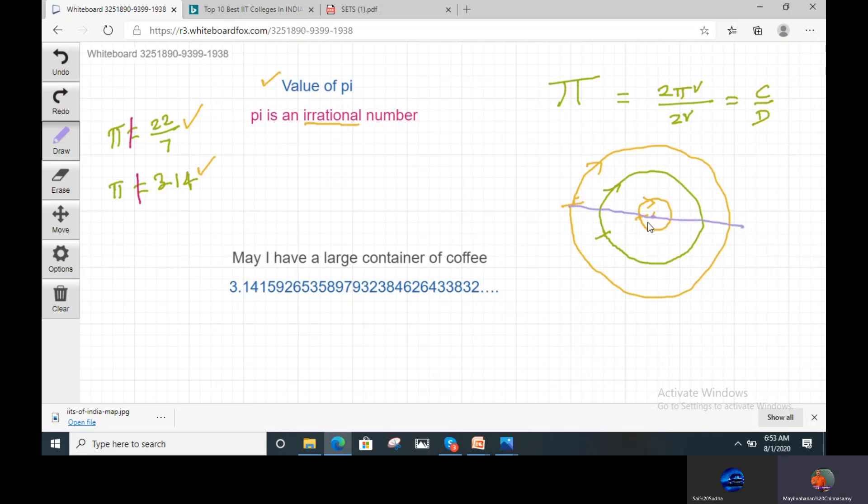So diameter and circumference, that ratio will be constant. When you take a circumference of the circle, when you divide it by the diameter, that ratio is constant. But that constant is not a rational number. It is irrational number.